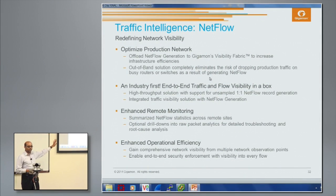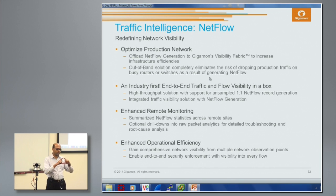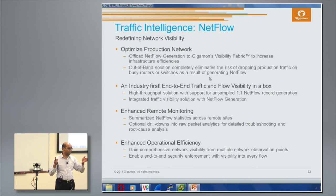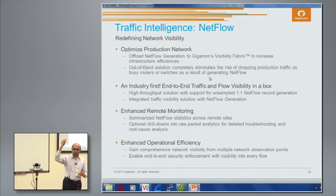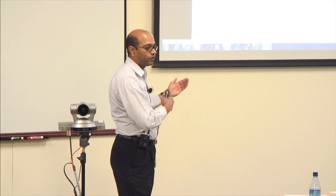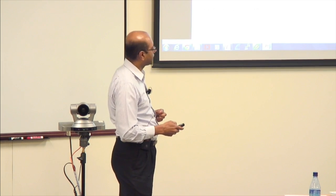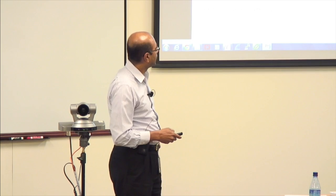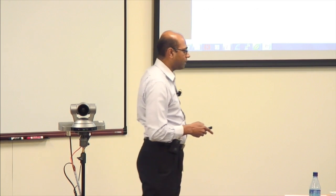This helps optimize the production network — there's no additional load created on production devices. It's a highly scalable system: on a simple HC2, a two-rack-unit system, we can support about 200 gigabits of processing. When you cluster multiple units together in a single rack, you can have 4 terabits of processing for NetFlow generation — a very scalable, centralized approach, and you can combine it with other GigaSmart operations.